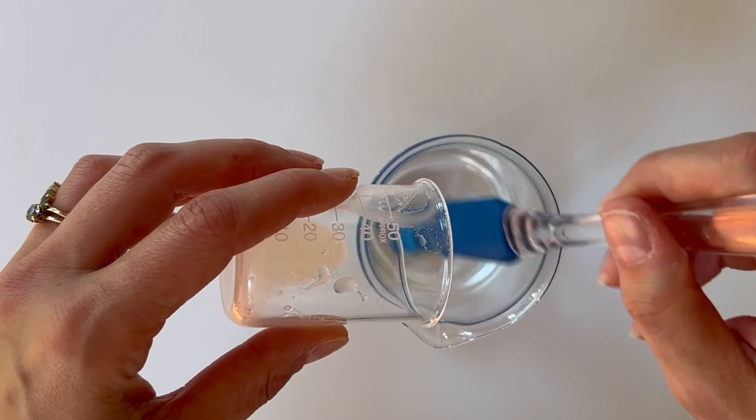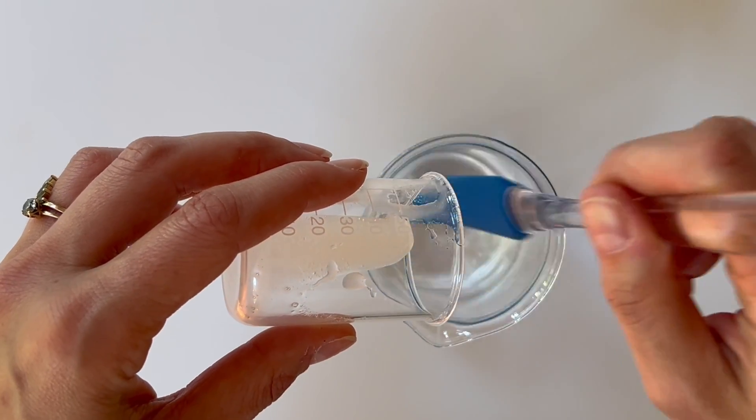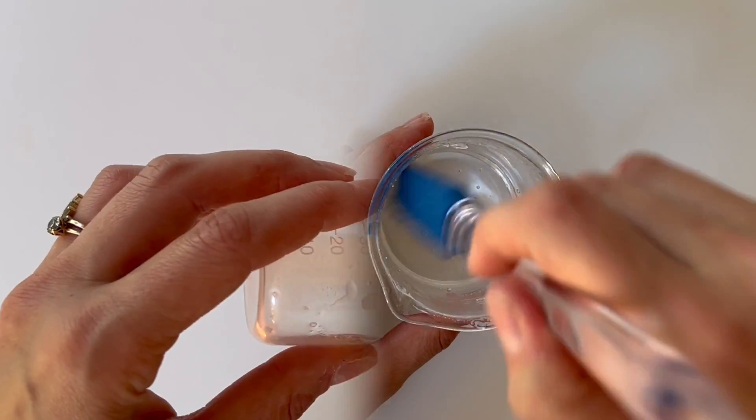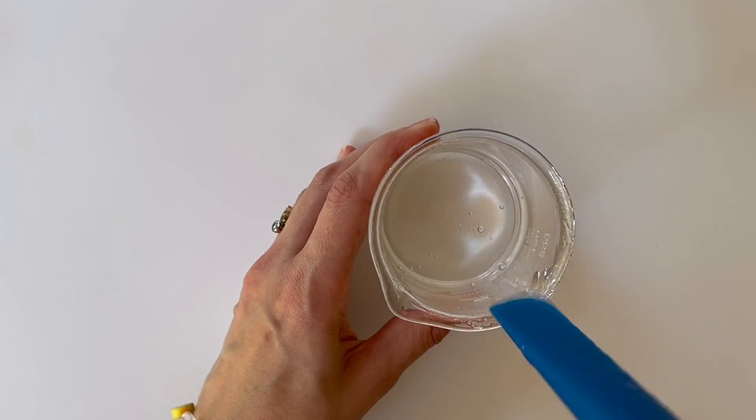Then we're going to add our phase B ingredients to our phase A ingredients, adding slowly and stirring. And this is now our phase AB.